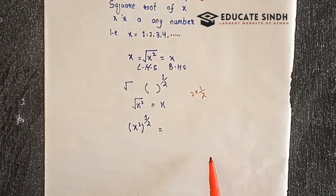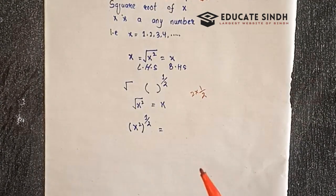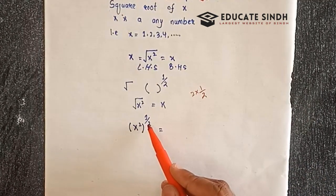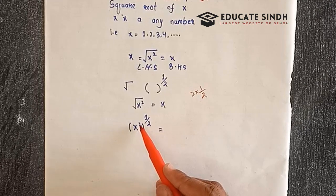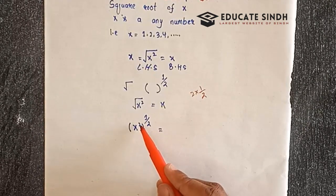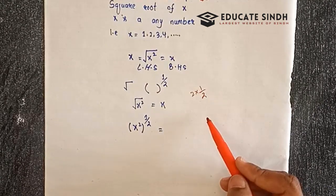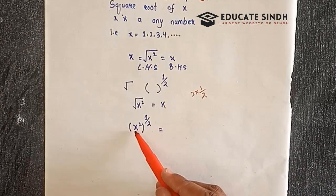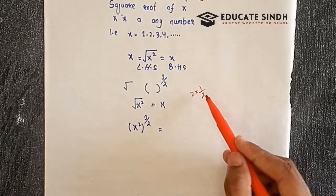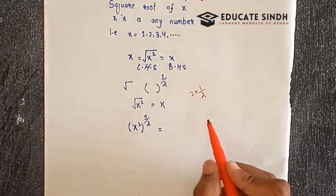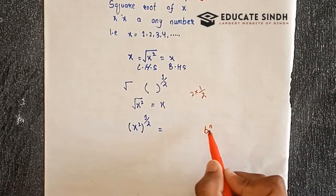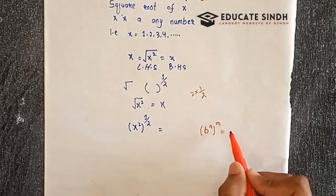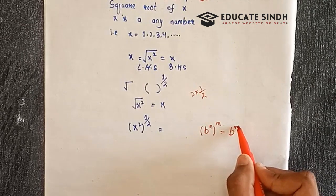In this video, we will explain the concept. The power is 2, 1 upon 2. The power is 1 upon 2. Basically, the first thing is that the power of a power: b to the power of n, whole power of a. The power of power is multiplied together.